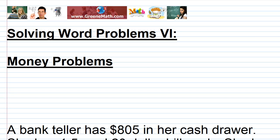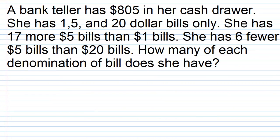This is Solving Word Problems Part 6, and this video is specifically going to look at money problems. Our first problem: a bank teller has $805 in her cash drawer. She has one, five, and $20 bills only. She has 17 more $5 bills than $1 bills. She has six fewer $5 bills than $20 bills. How many of each denomination of bill does she have?